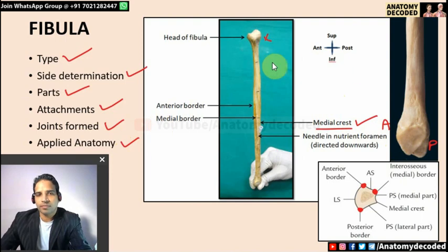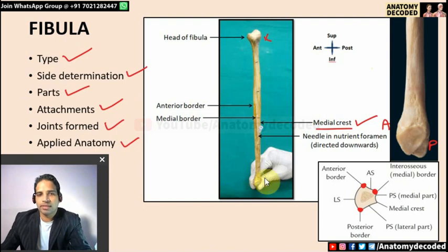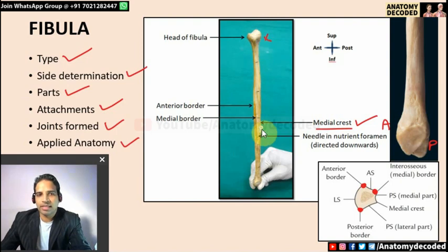Applied anatomy of fibula: fibula is a bone that violates the law of ossification. The law states that the epiphysis which appears first is the last to fuse. However, for the lower end of fibula, the epiphysis appears first and also fuses first — because it is a pressure epiphysis for weight bearing. The upper end fuses last because it is the growing end of fibula. The nutrient foramen is directed downwards, confirming the upper end is the growing end.